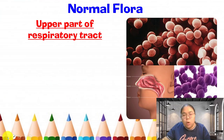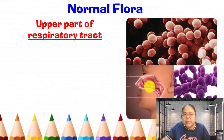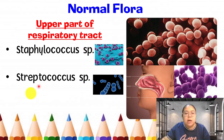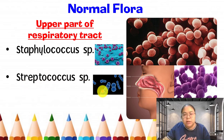Now we're going to see examples of normal flora. First, the upper part of the respiratory tract. You can see this diagram — this is the upper part of the respiratory tract. Examples of normal flora include Staphylococcus species and Streptococcus. The difference is: Staphylococcus has a coccus shape, like spheres. Streptococcus also has a sphere shape but they join together in a chain-link form.